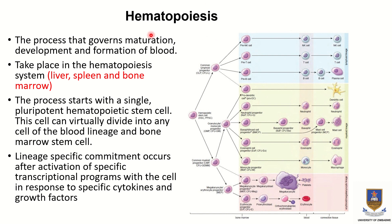The formation and maturation of blood cells is governed by a process called hematopoiesis, which takes place in the liver, spleen, and bone marrow. This process starts with a single pluripotent hematopoietic stem cell, which can divide into virtually any cell of the blood or bone marrow lineage. Lineage-specific commitment occurs after activation of specific transcriptional programs.